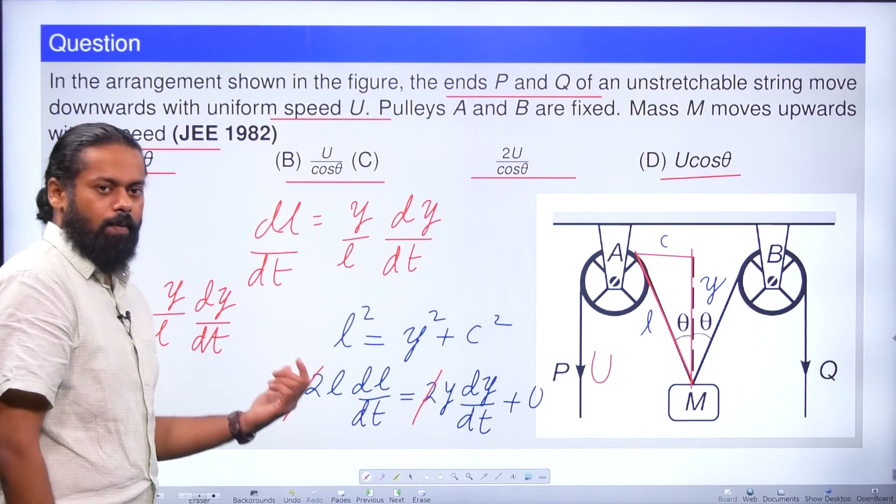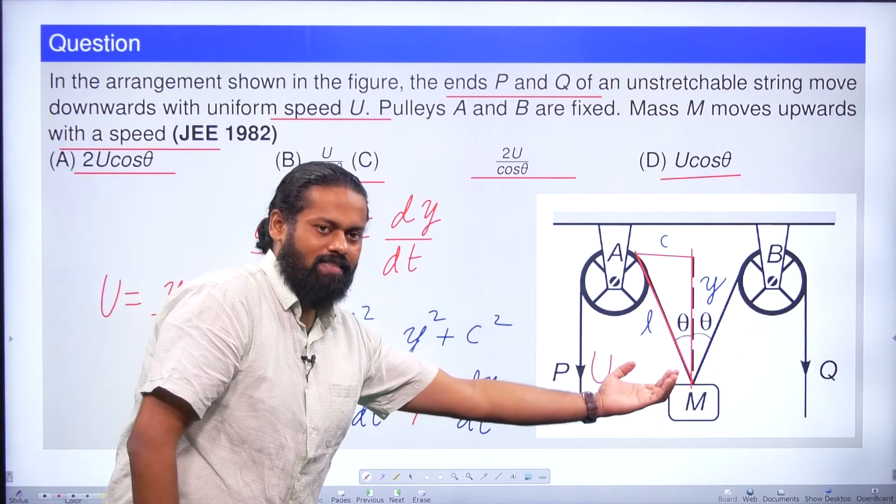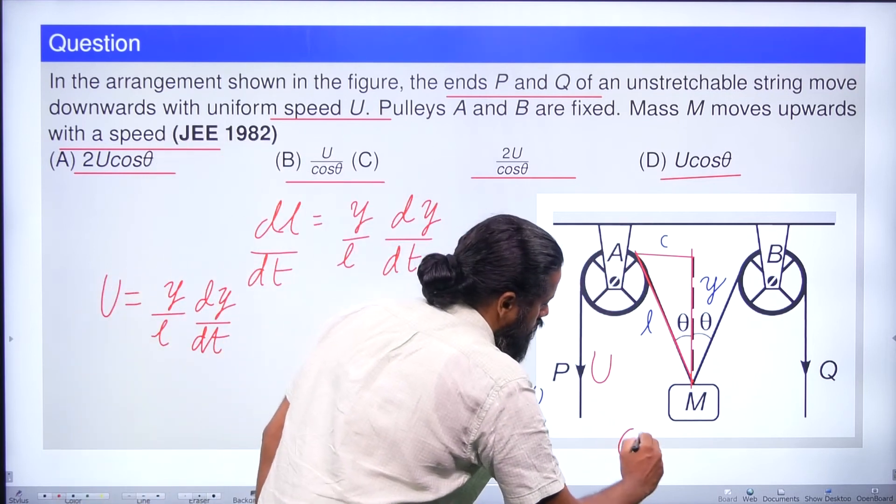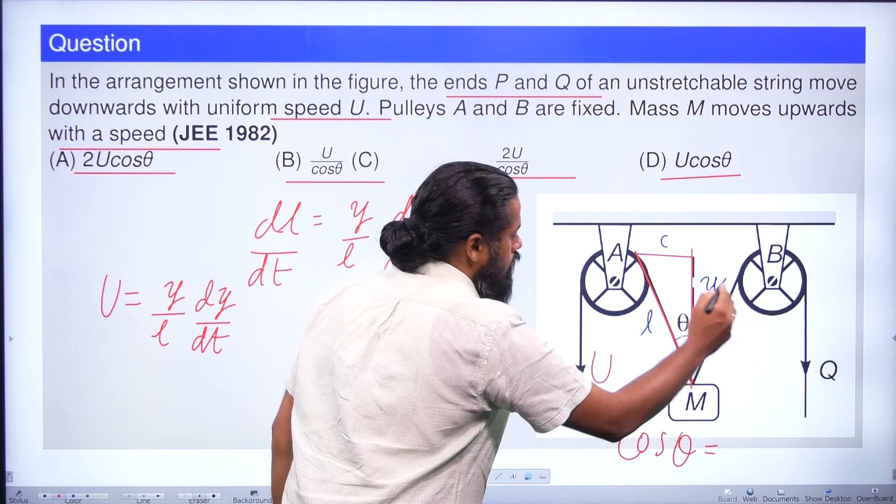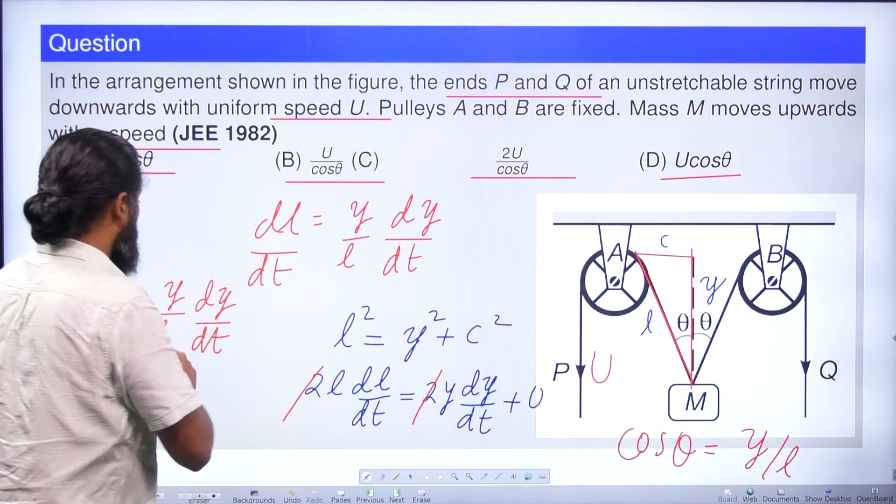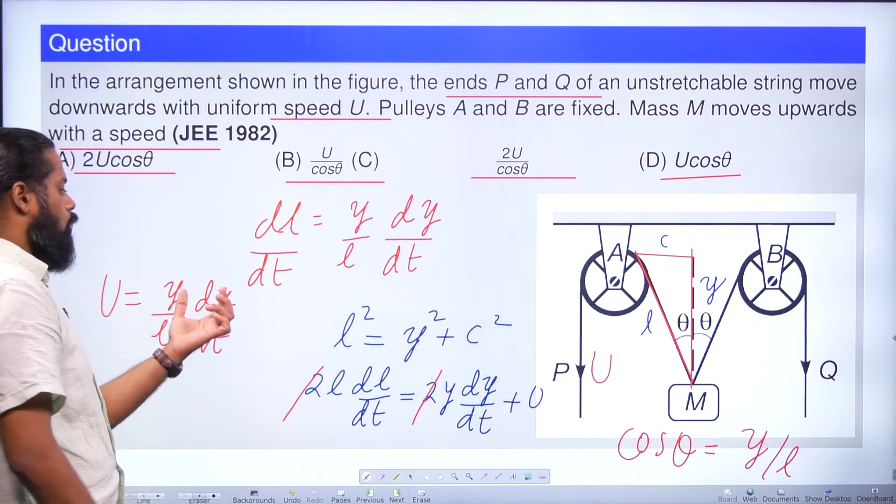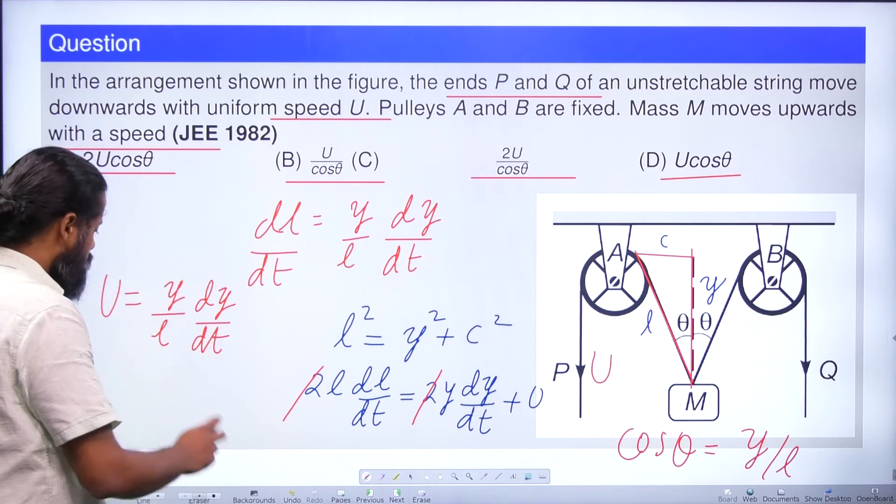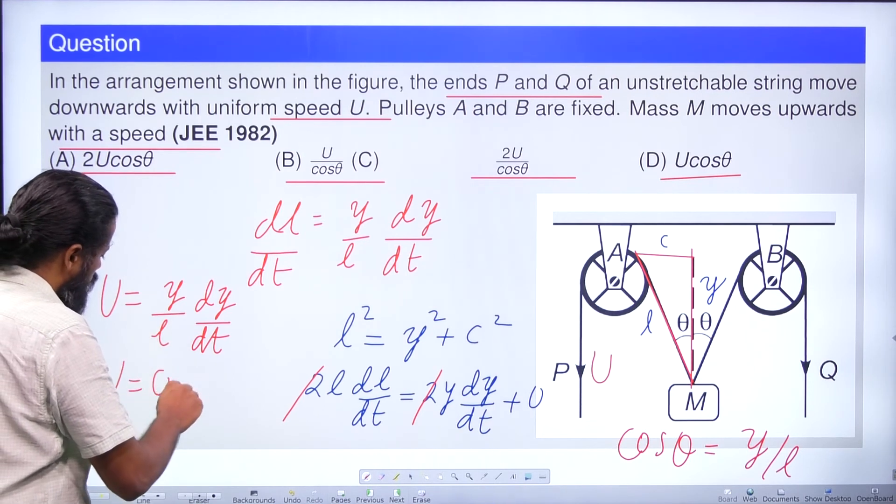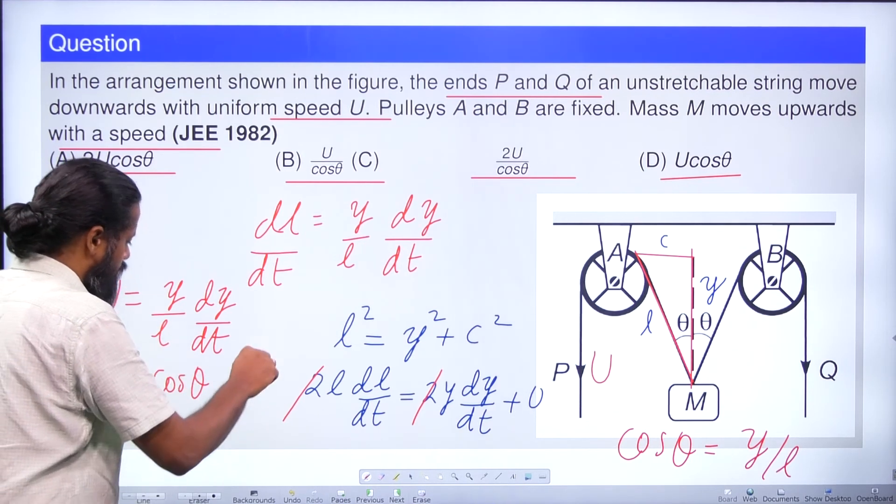See, what is dy/dt? The velocity at which the mass M moves in the upward direction. Again, you can take cos θ in this triangle. So cos θ = adjacent side by hypotenuse = y/l. So we can say y/l is cos θ, and I am going to call this velocity as capital V.